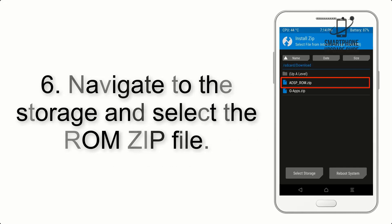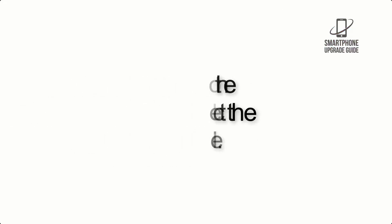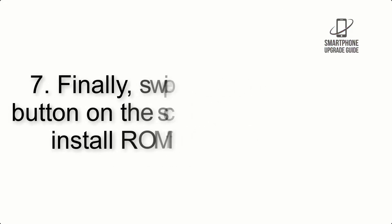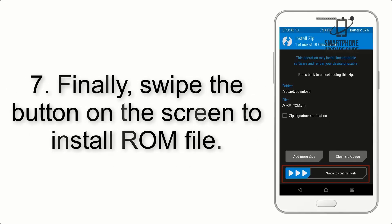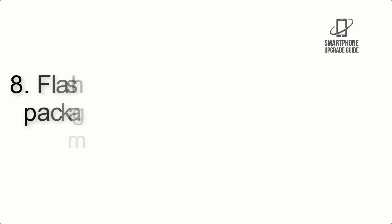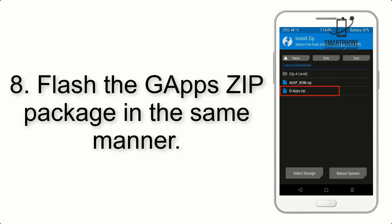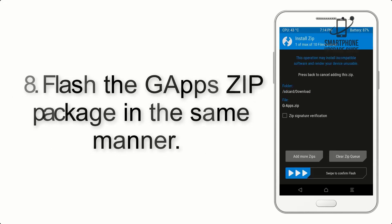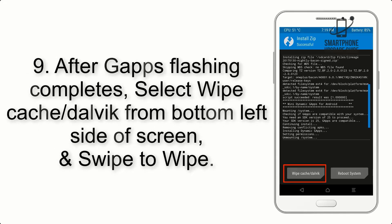Step 5: Go back to the recovery main screen and tap on the Install button. Step 6: Navigate to the storage and select the ROM zip file. Step 7: Finally, swipe the button on the screen to install the ROM file.